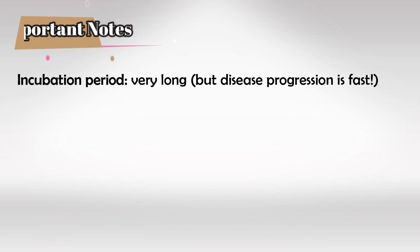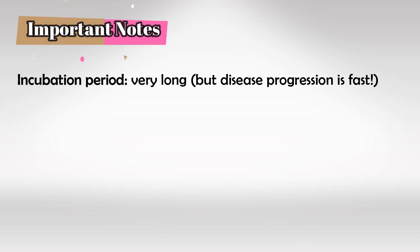It's very important to know that prion infection can have a very long incubation period. But once the disease starts, the progression is very quick. In other words, somebody could be infected with prion SC and not show any symptoms for many years, but once symptoms start, the progression is very quick.